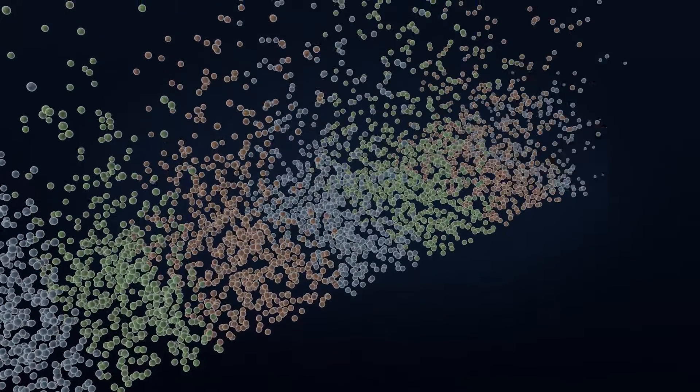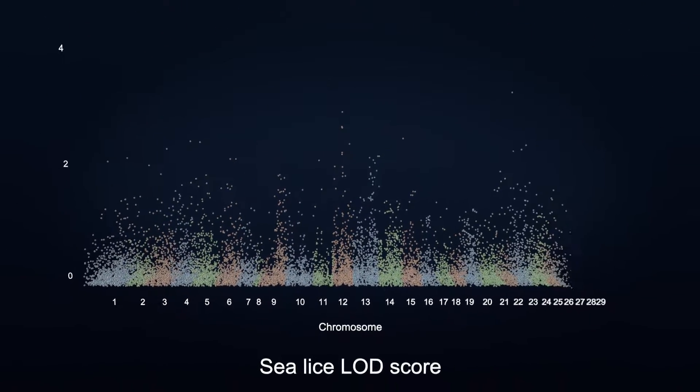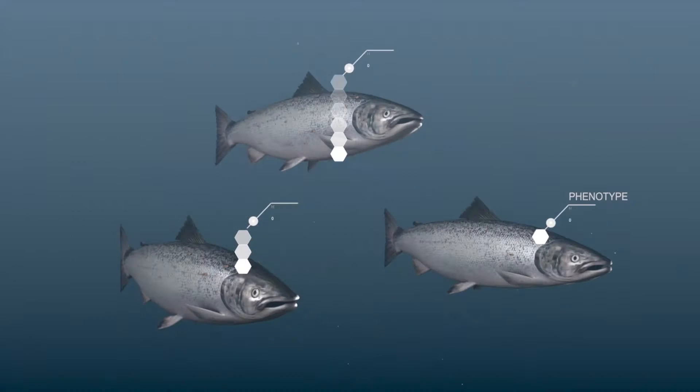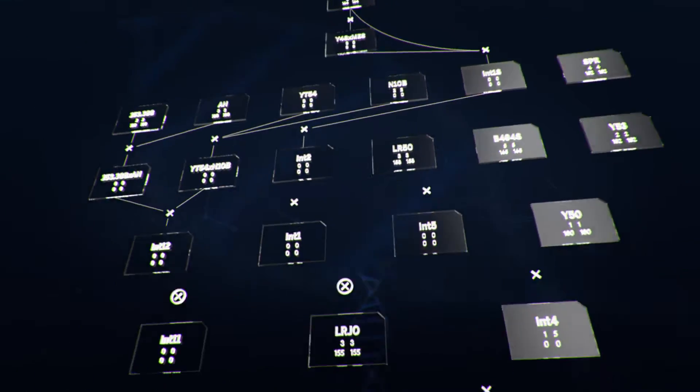To make sure we include all these small contributions from each individual gene, we need to study the entire genome. By recording data from siblings and using large pedigree databases, we are able to estimate how many sea lice an individual brood fish will get by studying its DNA.